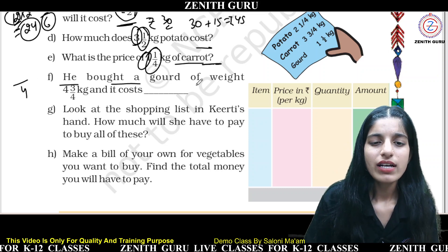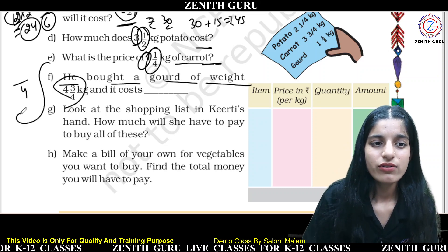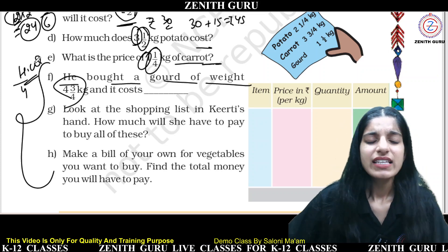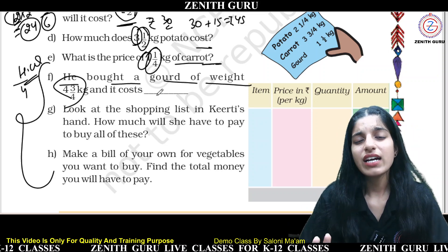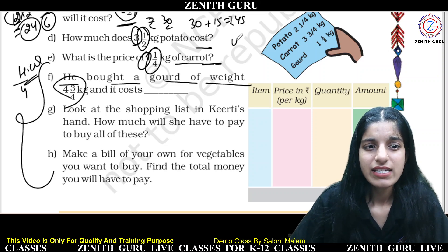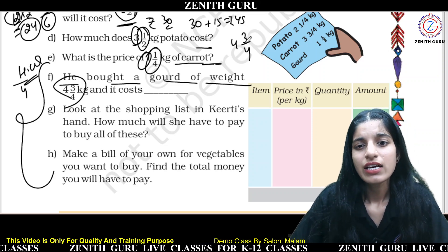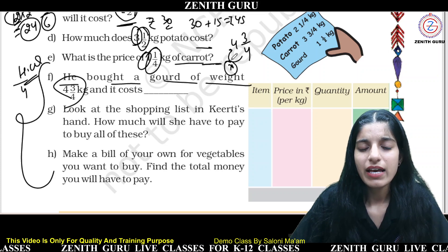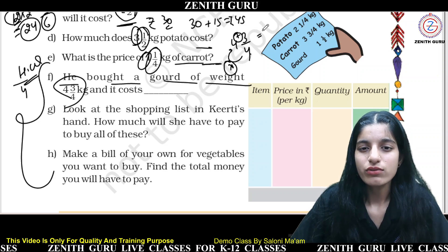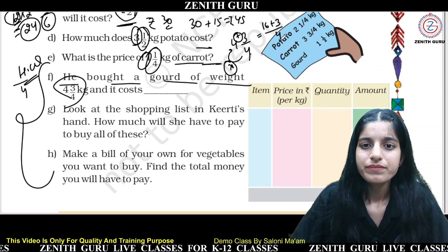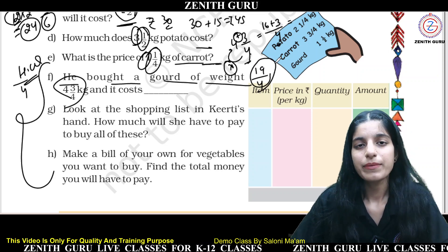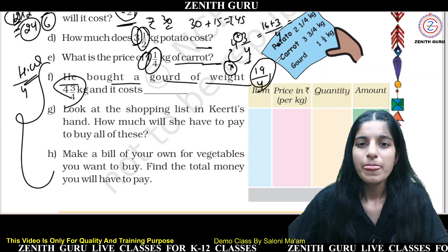For a mixed number like 4 and 3/4: to convert it, multiply 4 by 4 to get 16, then add 3 to get 19. The denominator stays the same, so 4 and 3/4 equals 19/4. You can solve all these problems this way.